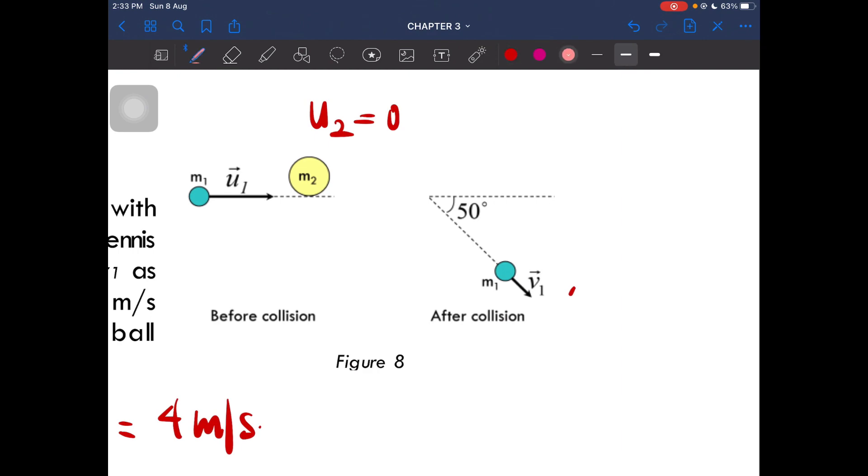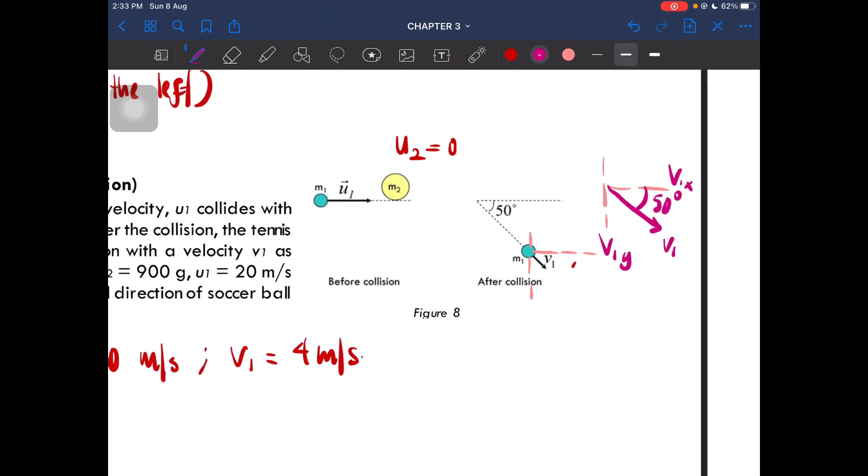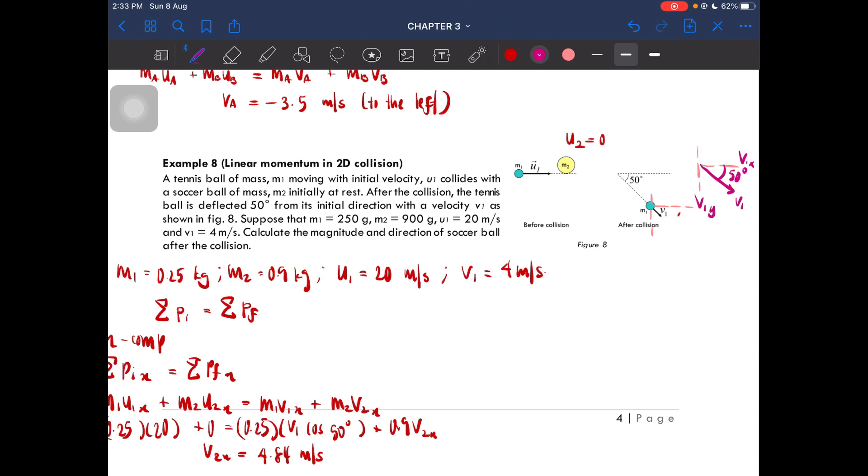If you're confused, you can just draw something like this so that you know the 50 degrees is here. Our v1 is this one, and the 50 degrees is here. So we are looking at v1y and v1x.